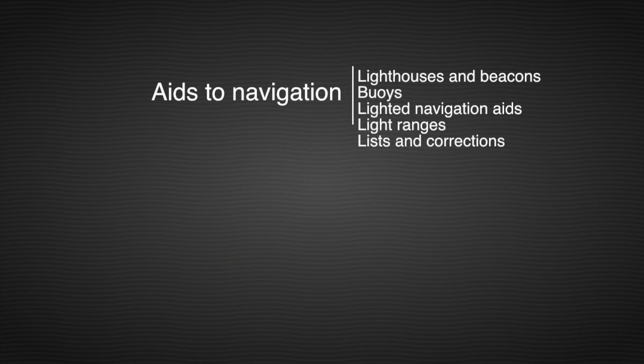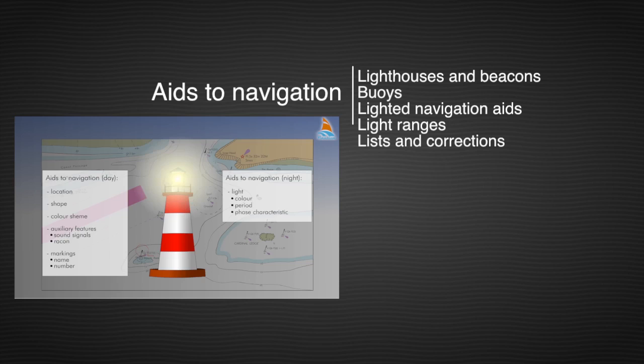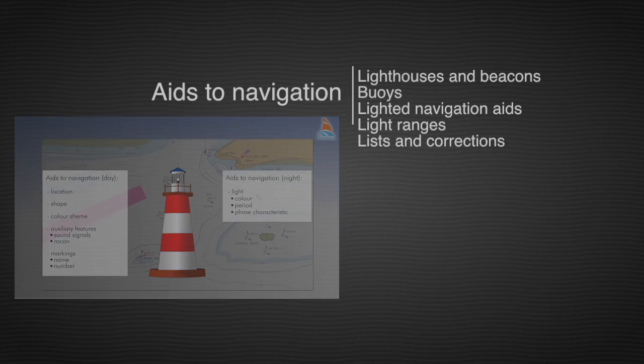Tides to navigation. Each light has three distinctive characteristics: the color, the period, and the phase characteristic.